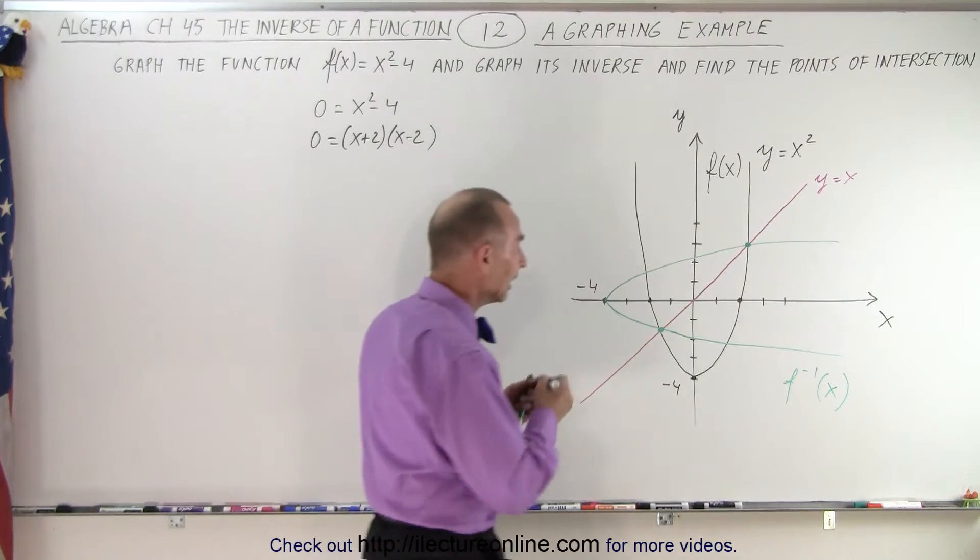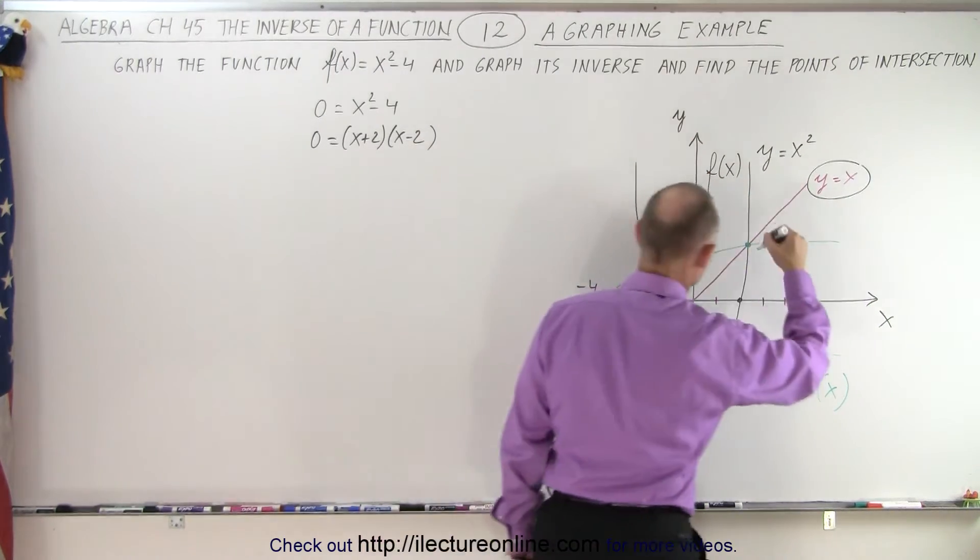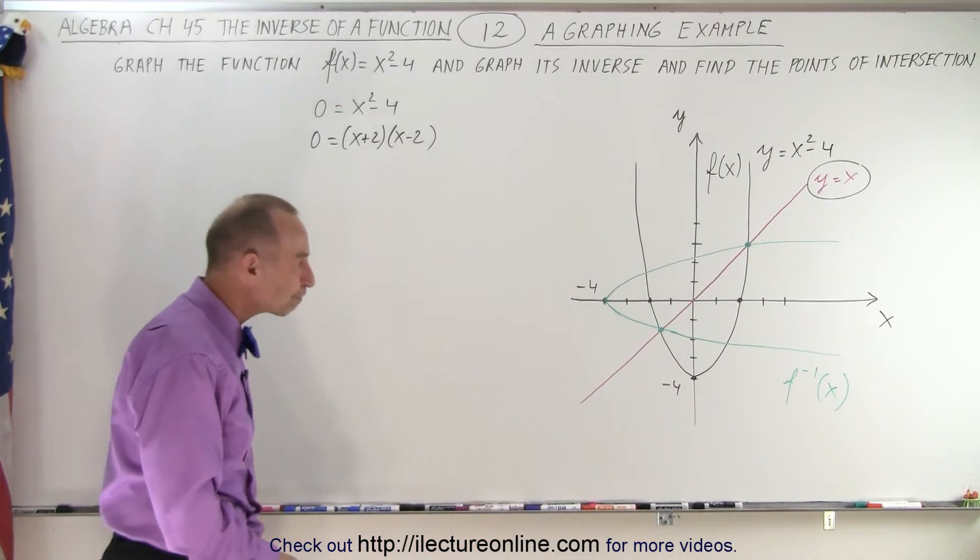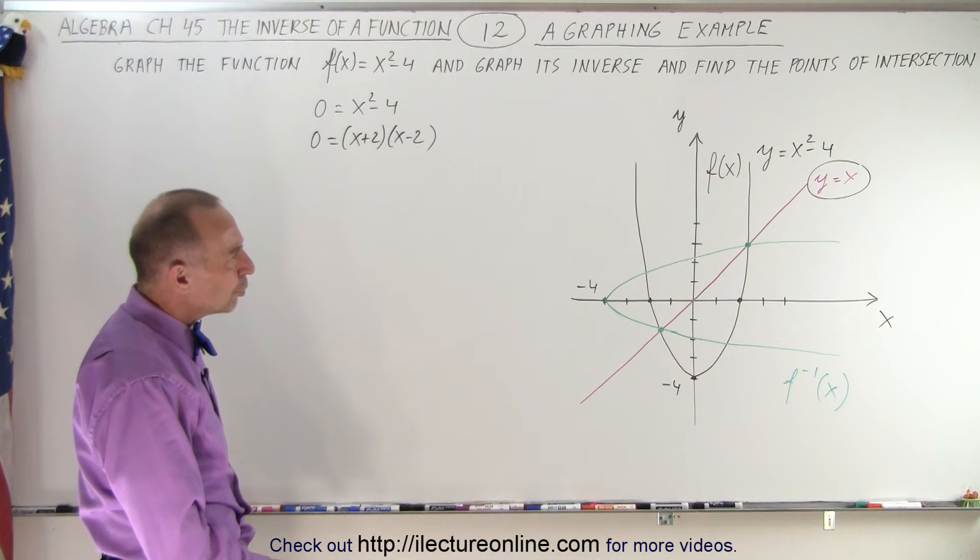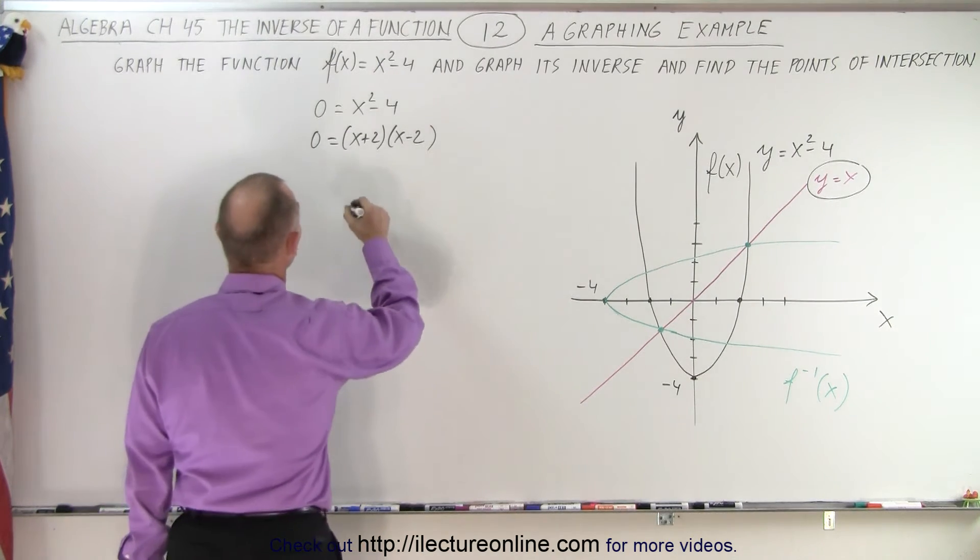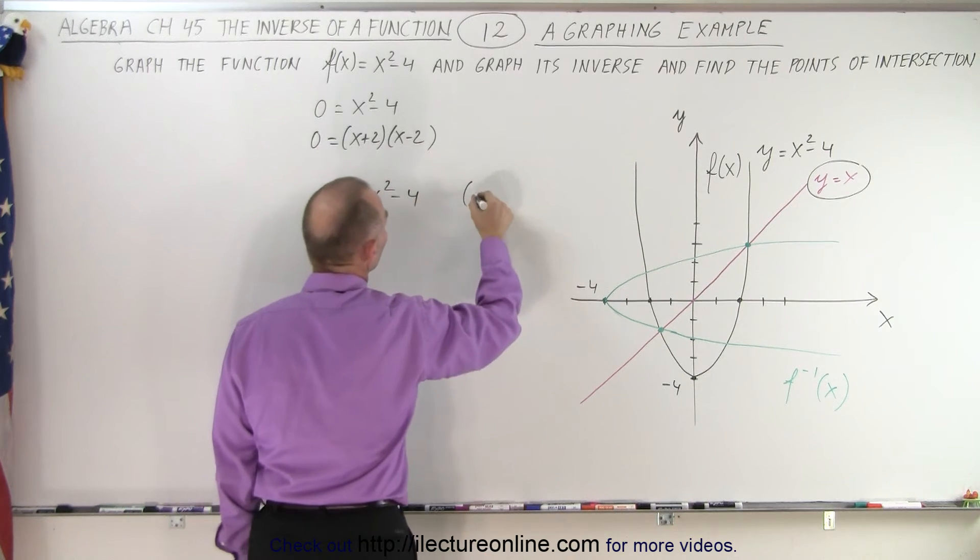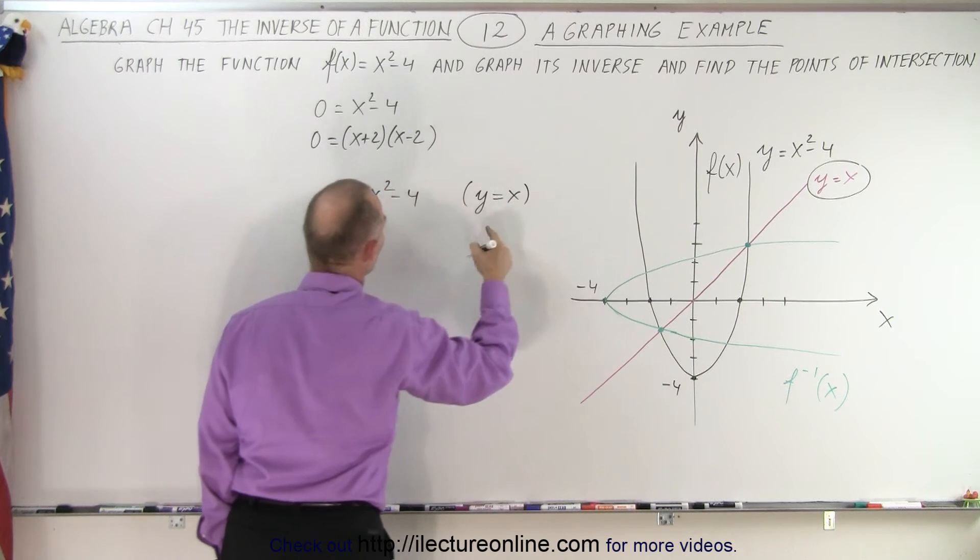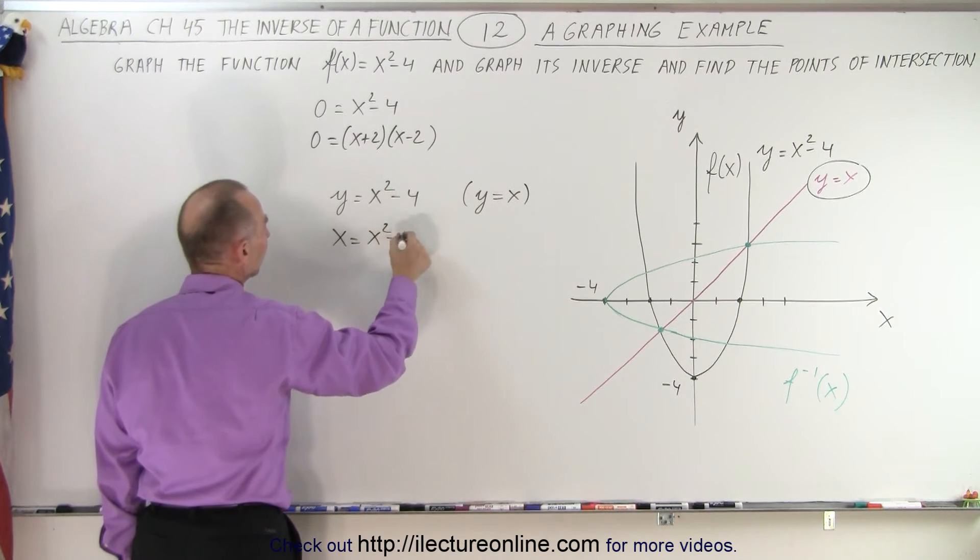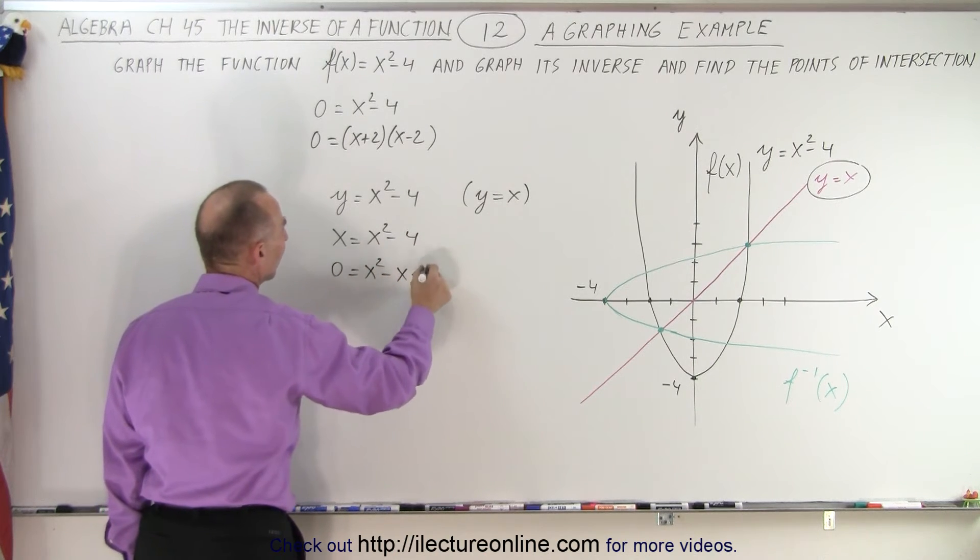We do know that in all cases, y equals x. So what we could do is set y equal to x. So here we have the function y equals x squared minus 4. And we know that y equals x. So then I could replace y by x. So we get x equals x squared minus 4. Or 0 equals x squared minus x minus 4.